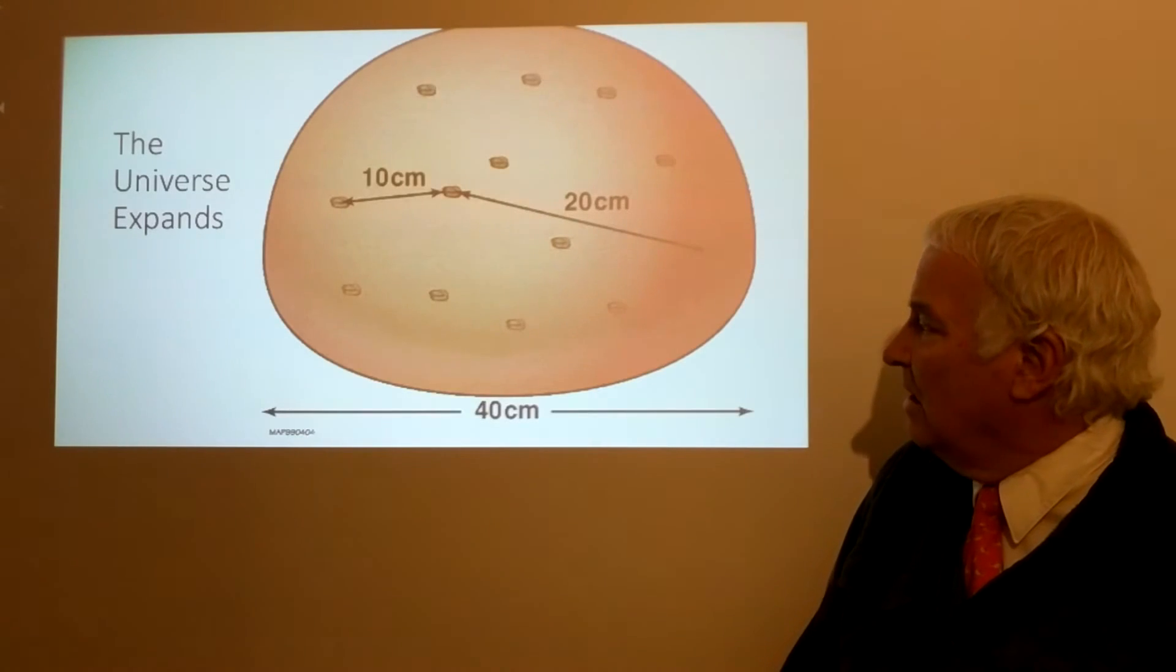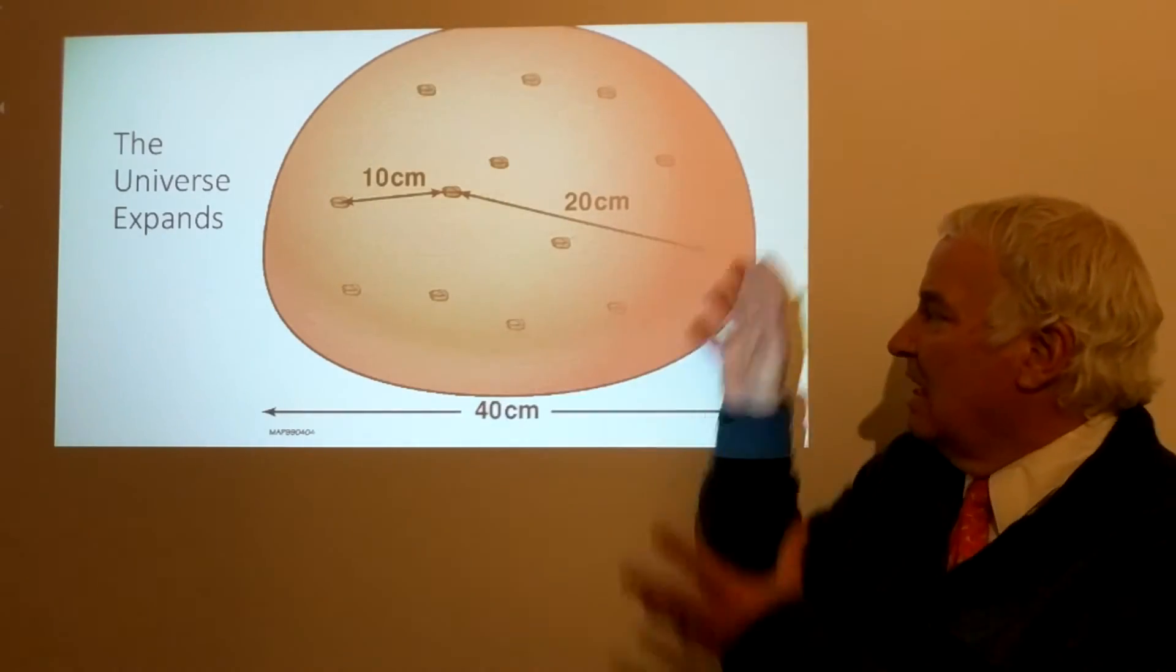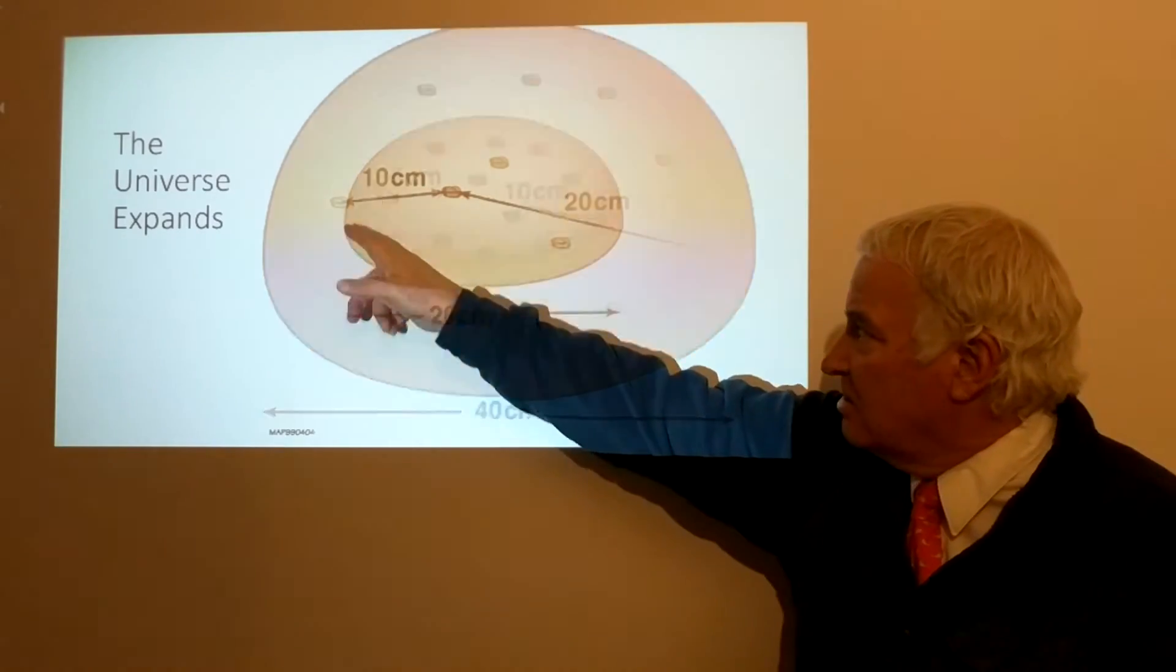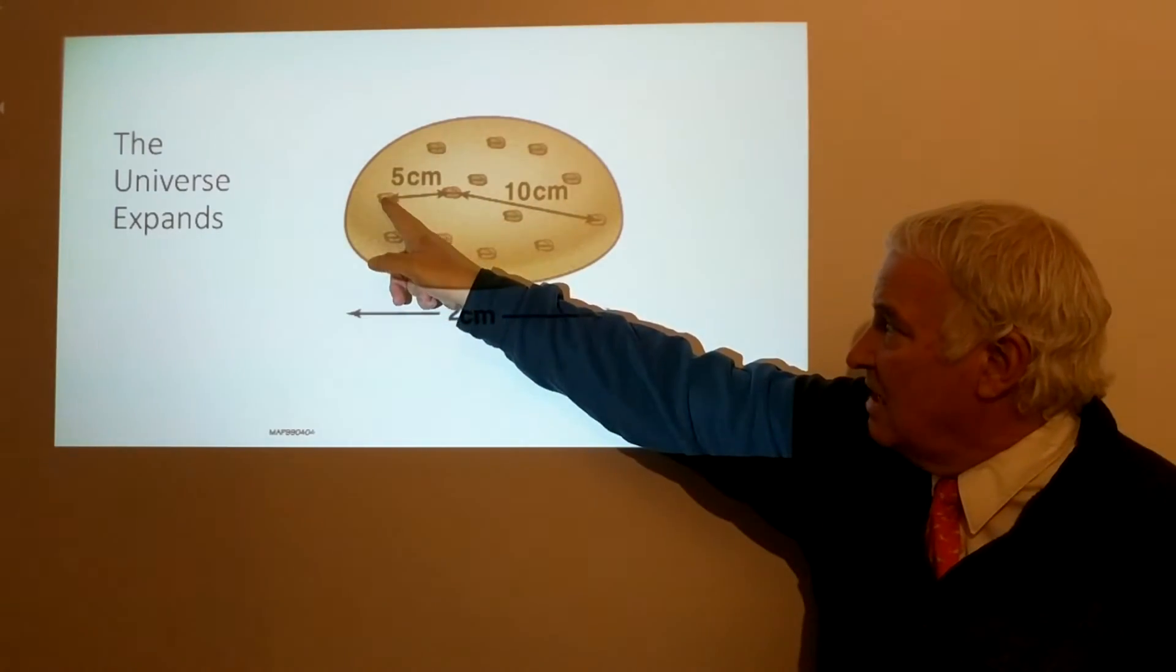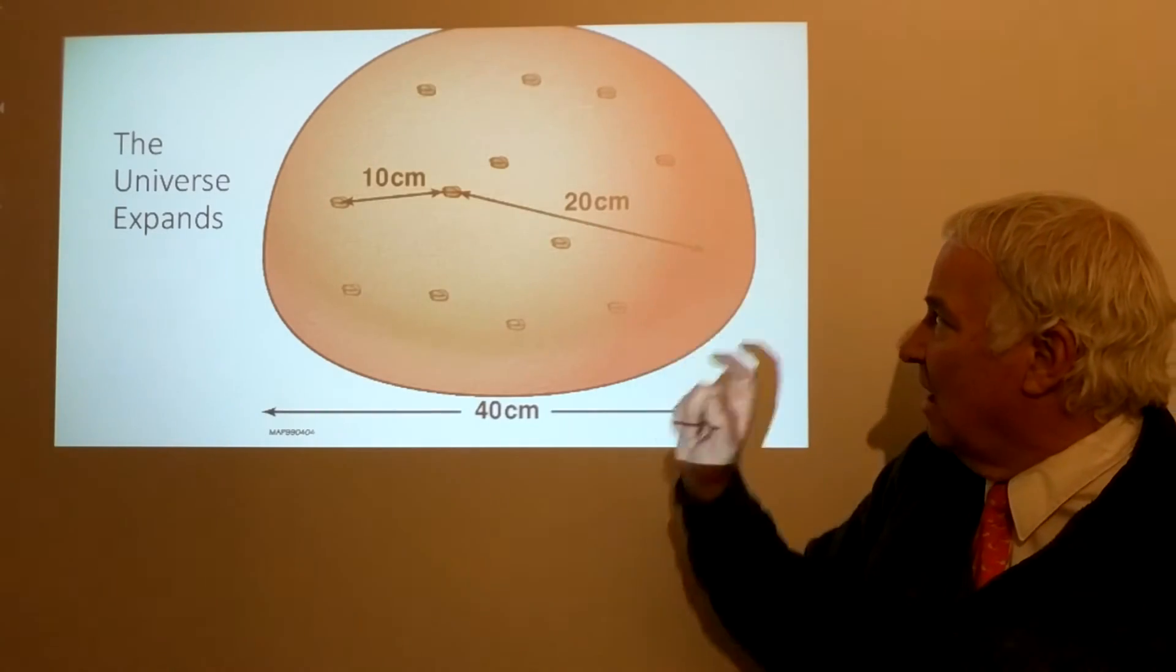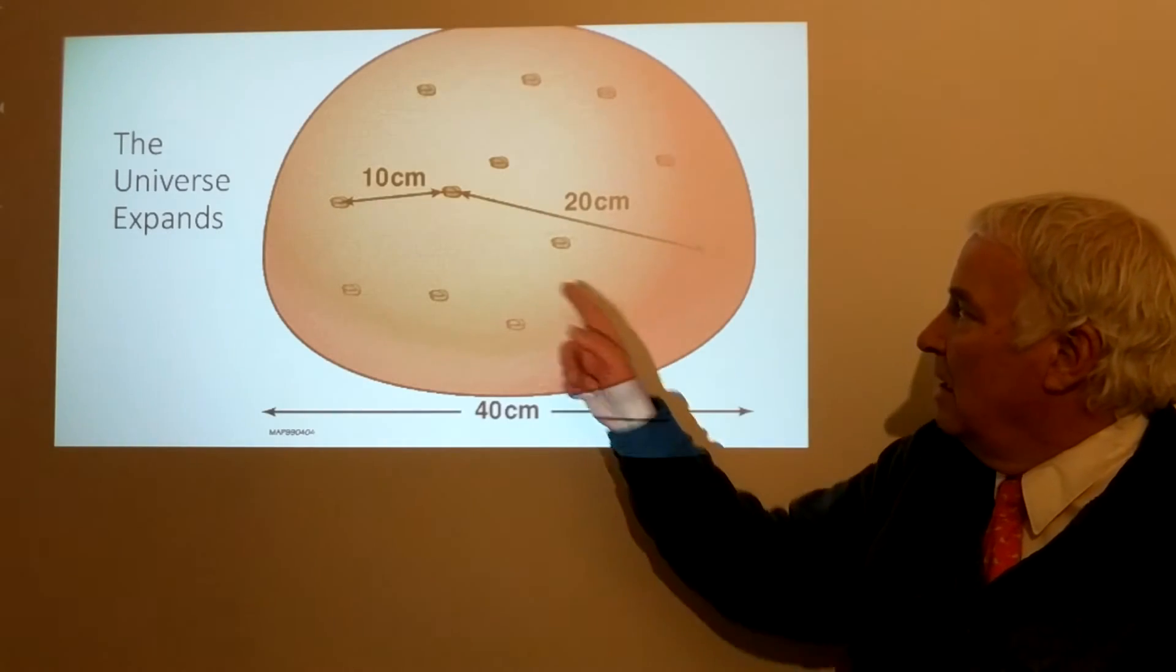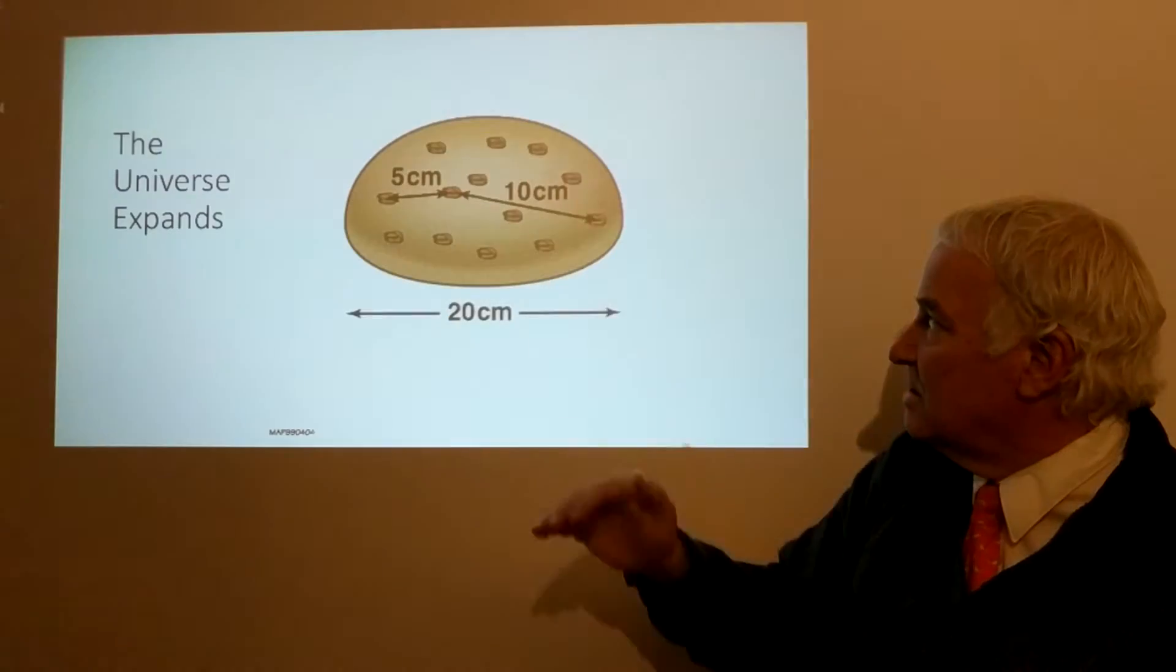This was difficult to explain, but we can do it with some thought: the universe is expanding. We can imagine a raisin cake model where all the raisins are galaxies and the cake itself is the whole universe. If the universe gets bigger, the distance between the galaxies is increasing. Suppose this is my home galaxy, the Milky Way—the distance to this galaxy doubled from 5 centimeters to 10 centimeters. This galaxy went from 10 centimeters to 20 centimeters because we can imagine the yeast causing the bread to expand.